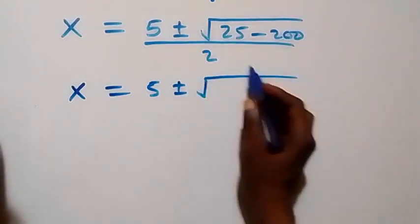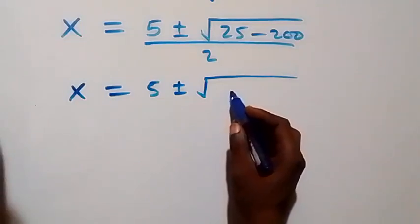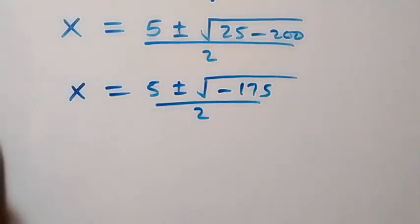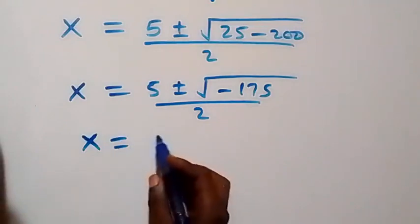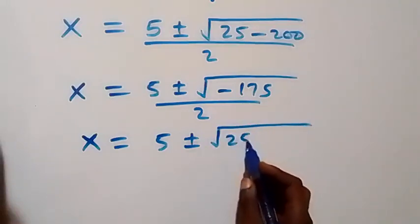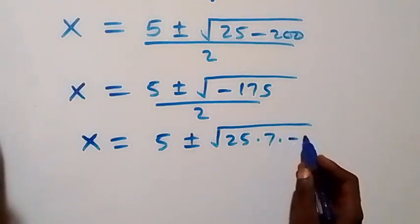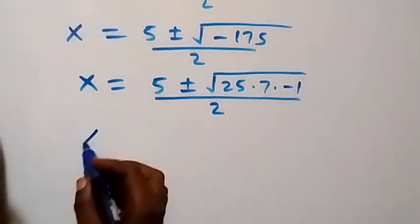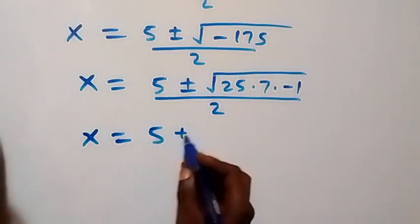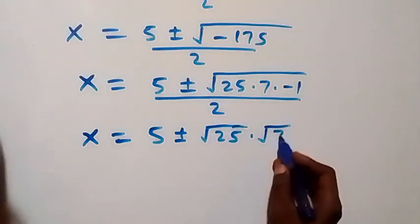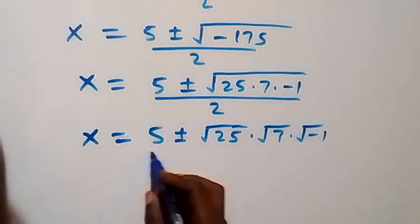We can write this as x equals five plus or minus square root of 25 times seven times negative one, all over two. Separating the roots: x equals five plus or minus root 25 times root 7 times root of minus one, all over two.